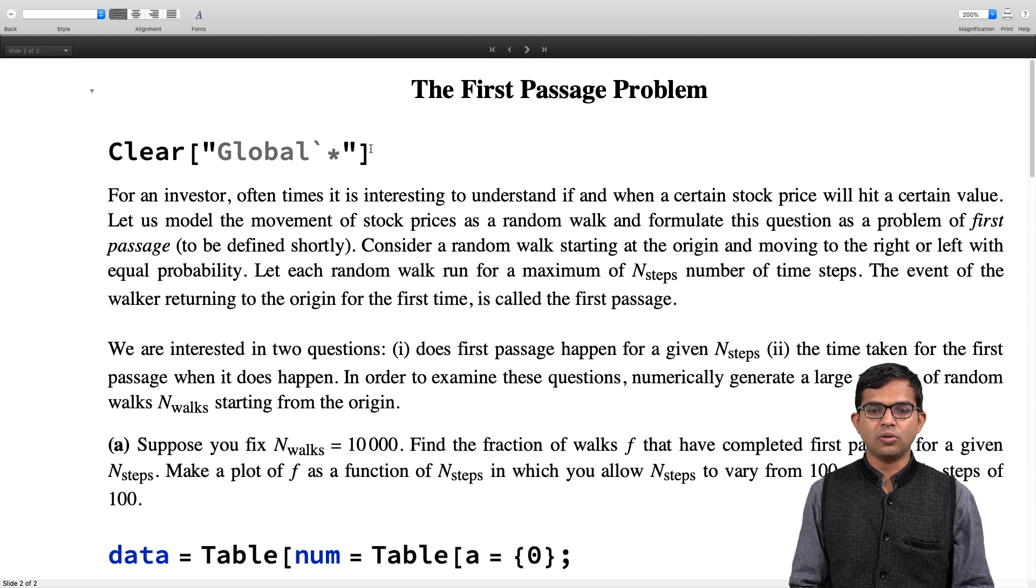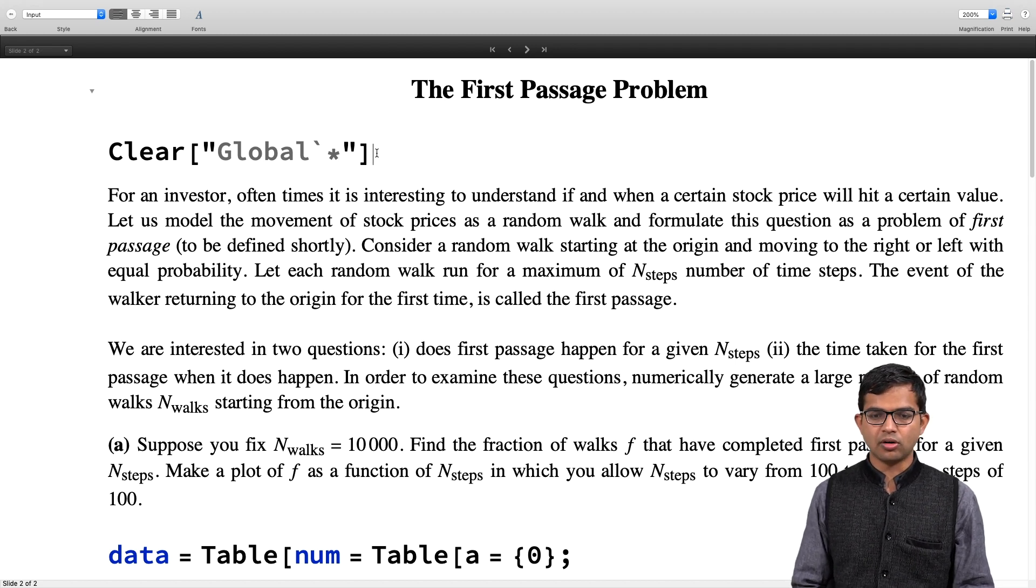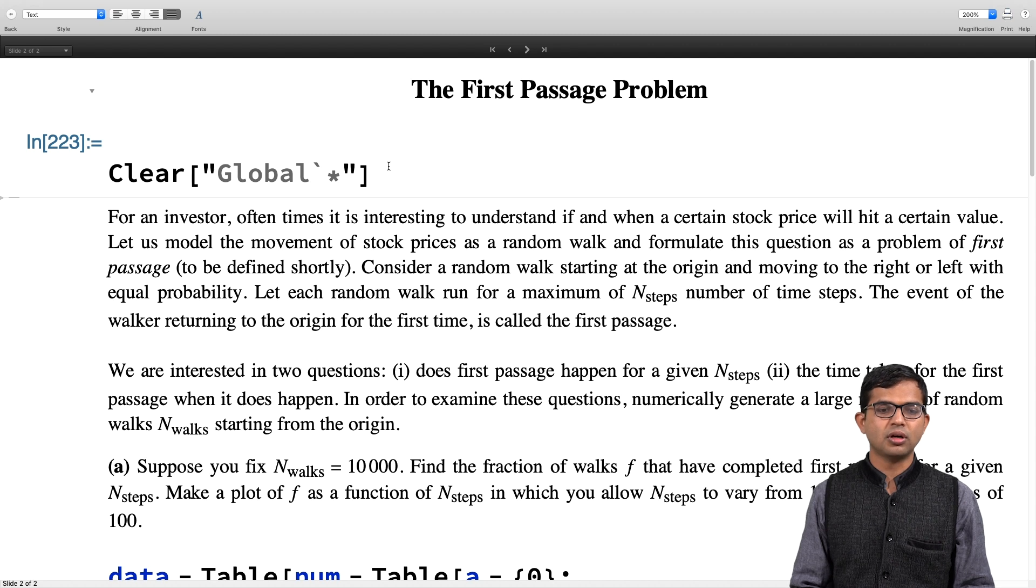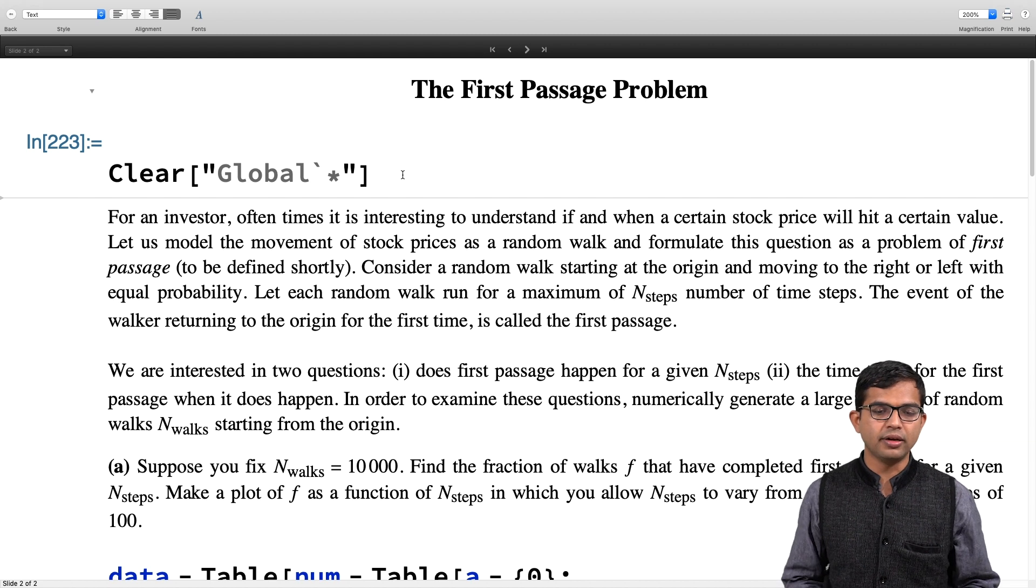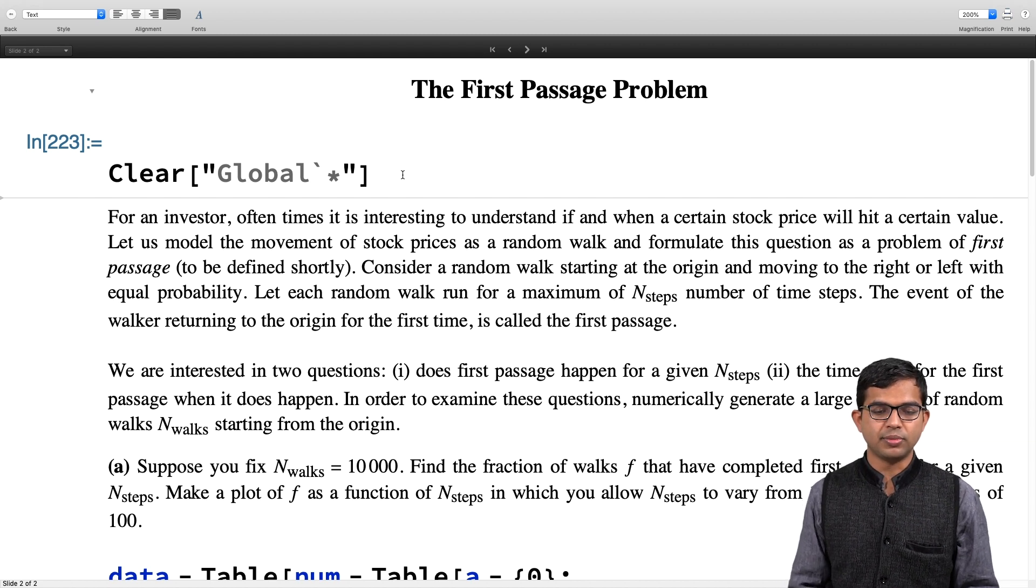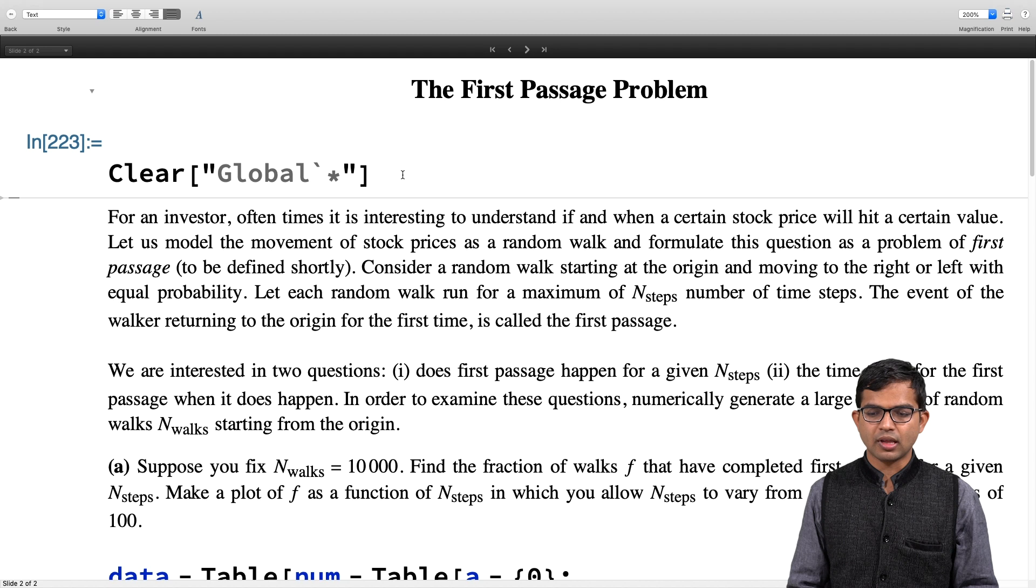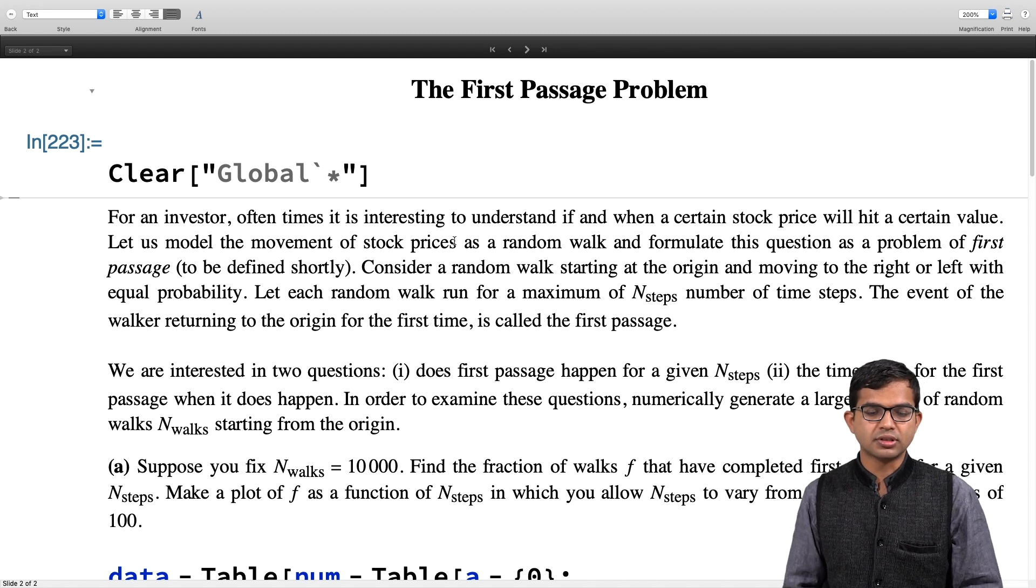As always, I will start by clearing Mathematica of any prior knowledge. As you can see, I have already run Mathematica, so it is showing some weird number. If it had started afresh, it would be just 1, but it is 223. I clear all the variable information it has.